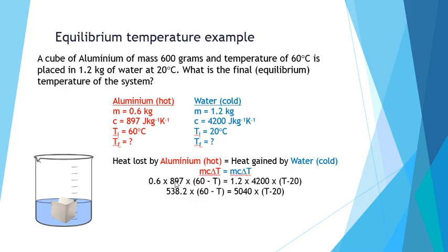We simplify this. 0.6 times 897 comes out to 538.2, and 1.2 times 4200 comes down to 5040. Next we expand our brackets. So 538.2 multiplied by 60 gives us 32,292 and 538.2 times T. Then the same on the right hand side, we expand our brackets: 5040T minus 100,800.